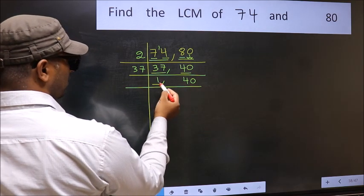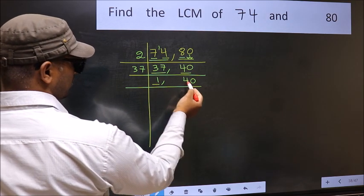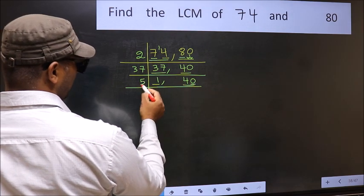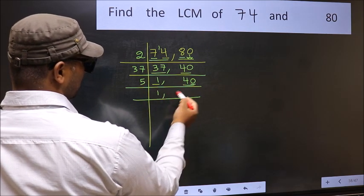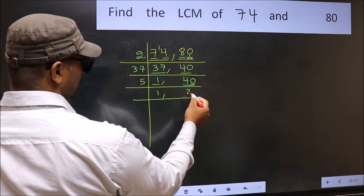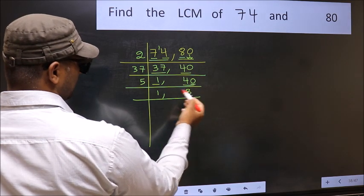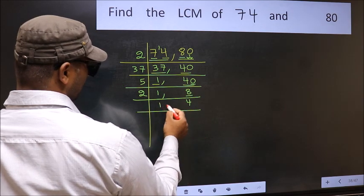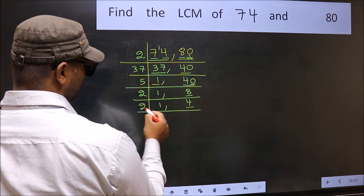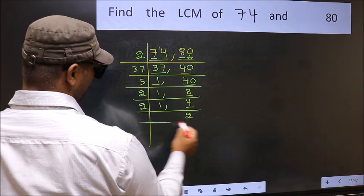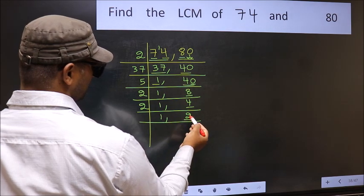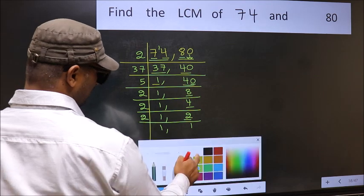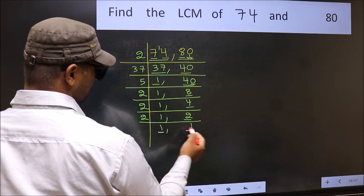Now we got 1 here, so focus on the next number 40. The last digit is 0, so take 5. We get 40 in the 5 table as 5 eights are 40. Now 8 is 2 fours are 8, and 4 is 2 twos are 4. Now 2 is a prime number, so 2 ones are 2. We got 1 in both places.